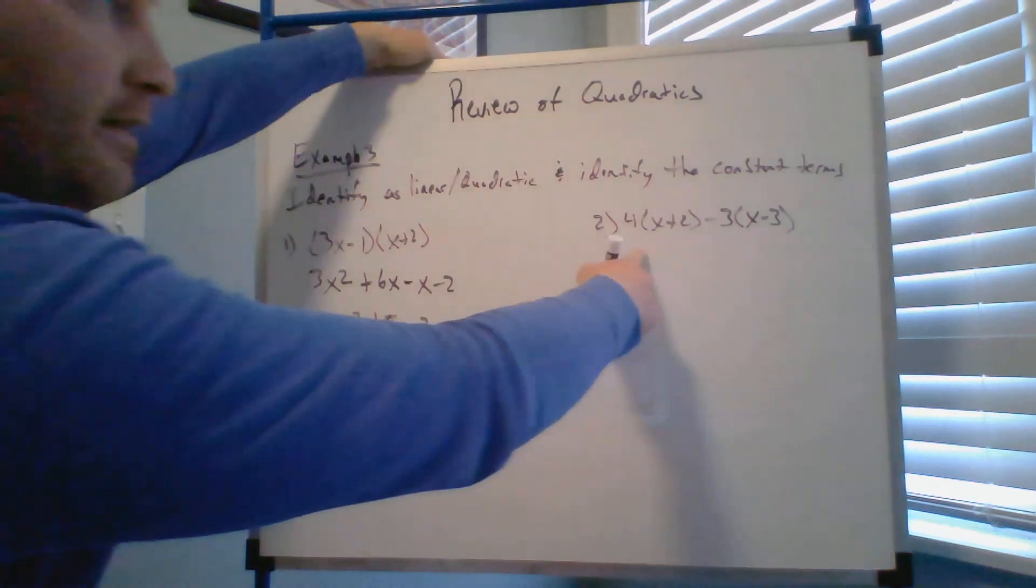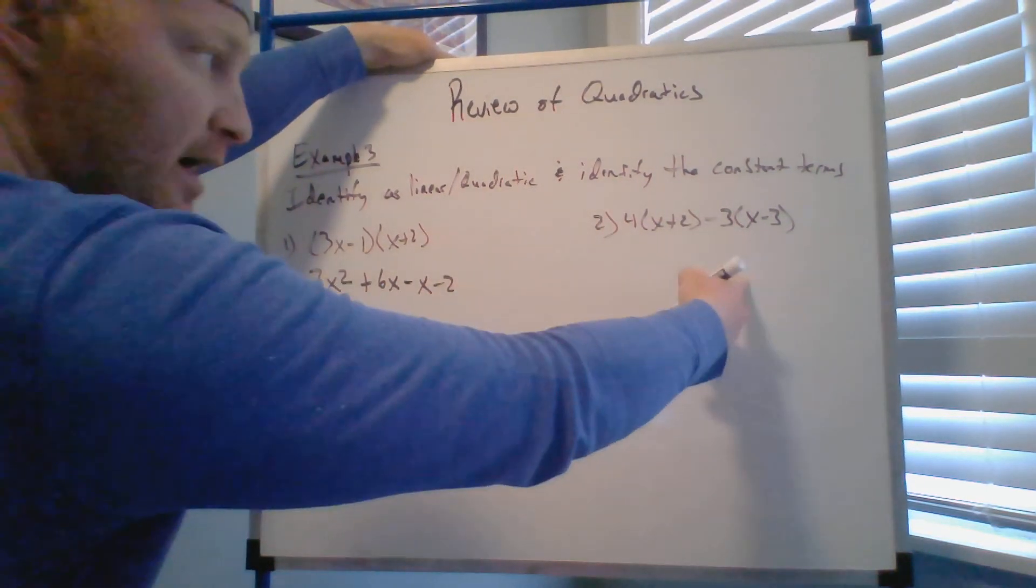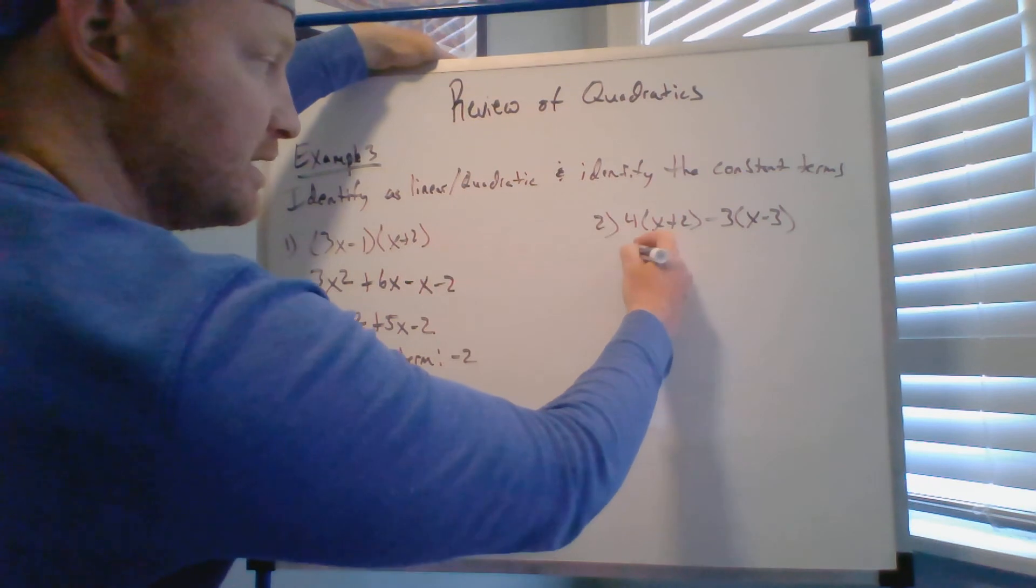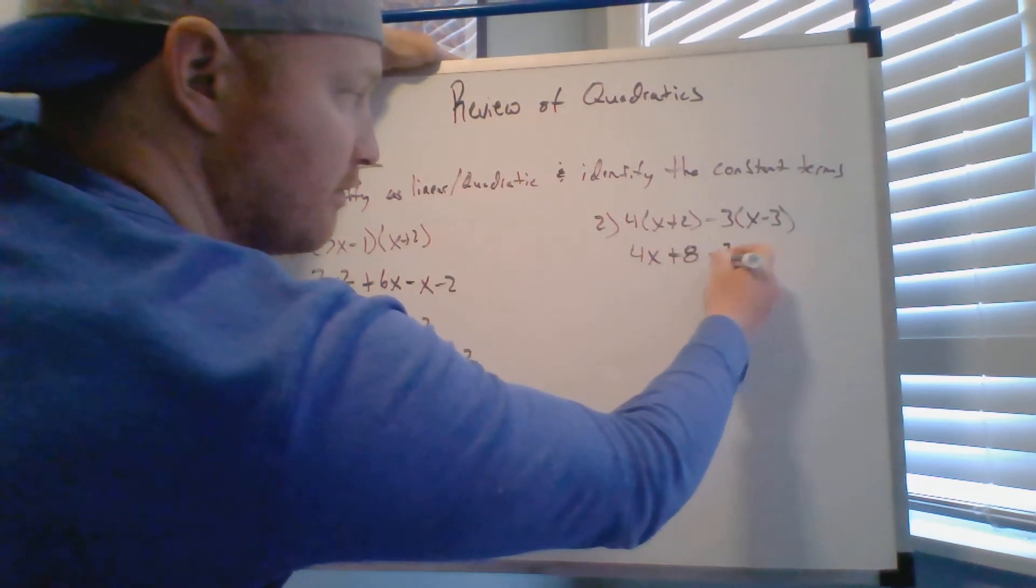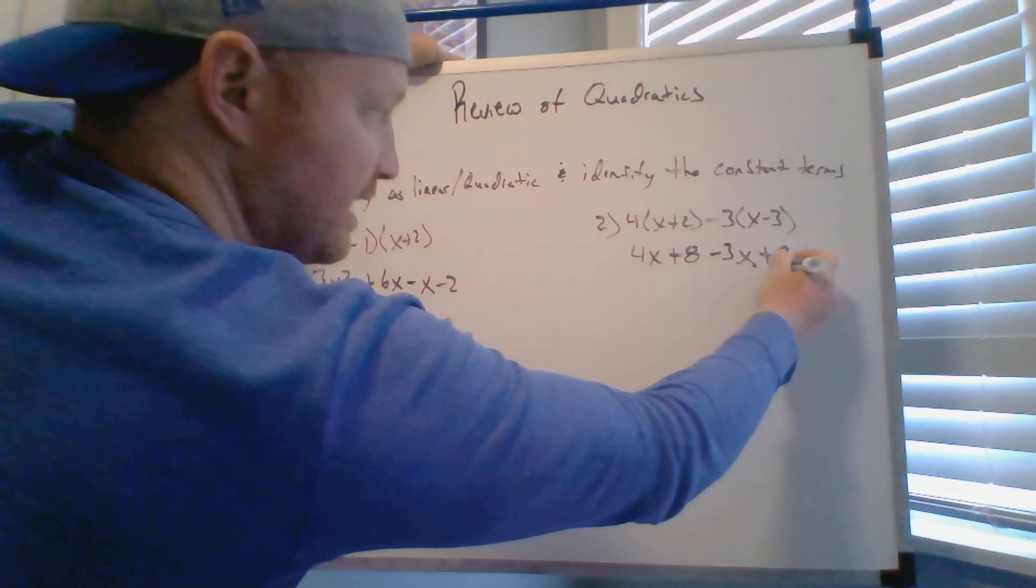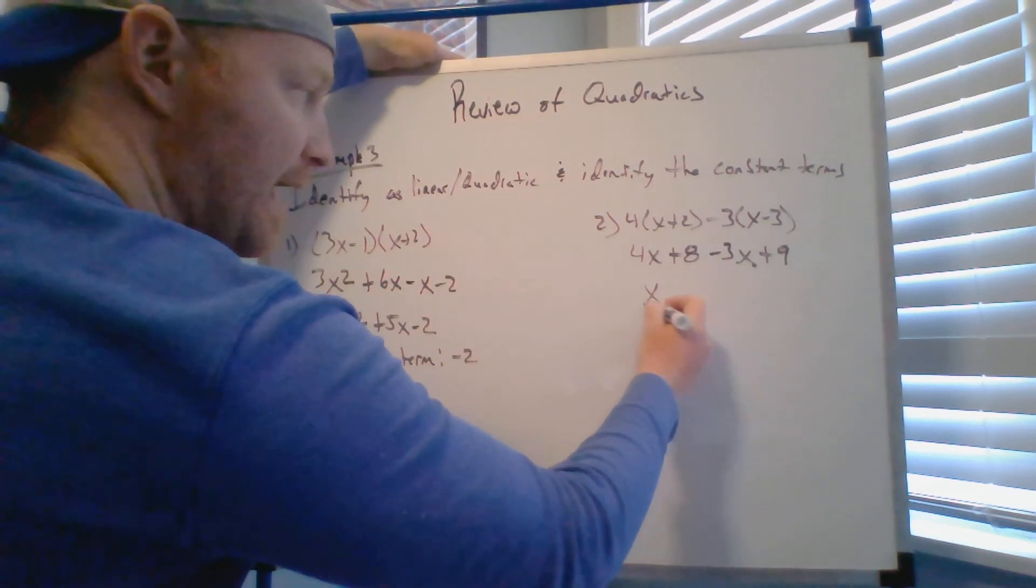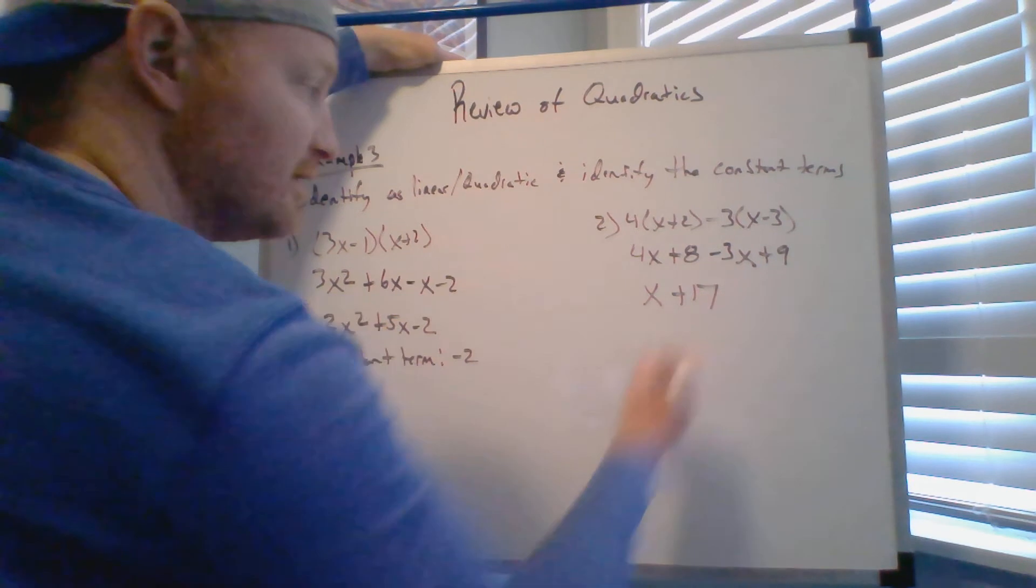Now over here on this one, carry out this using the distributive property. So I do this times this, I get 4x plus 8 minus 3x plus 9. I'm going to combine my terms, I'm going to get x plus 17.